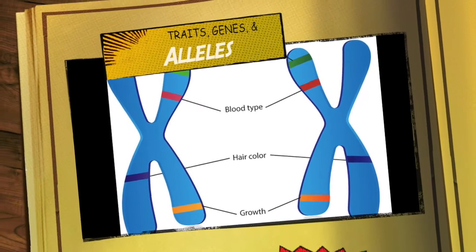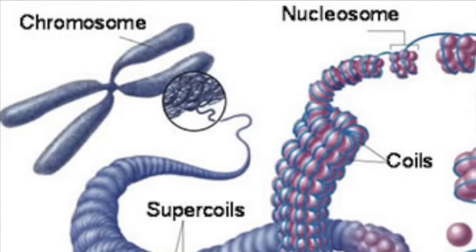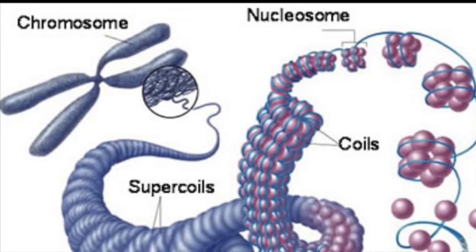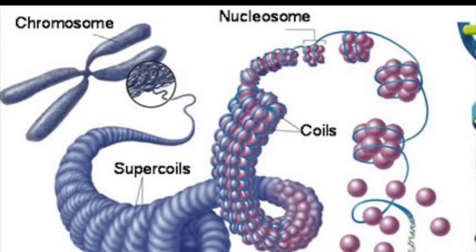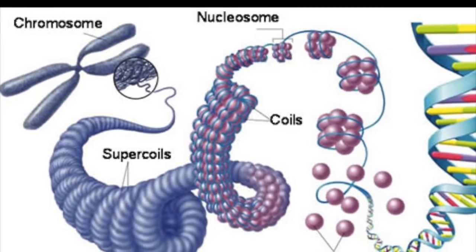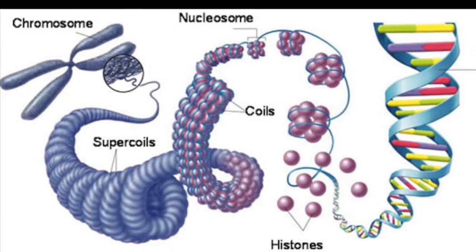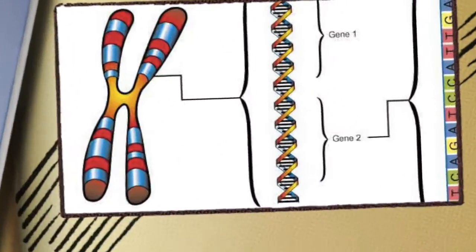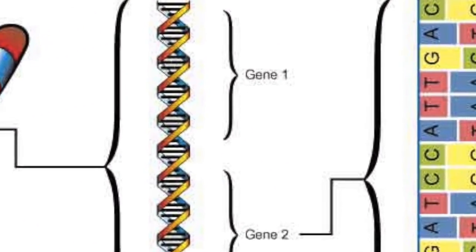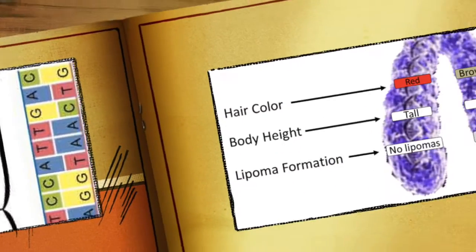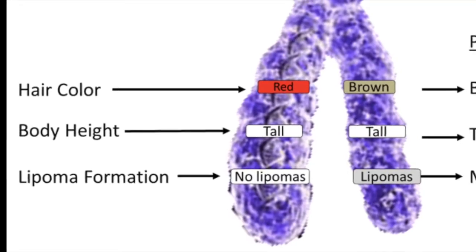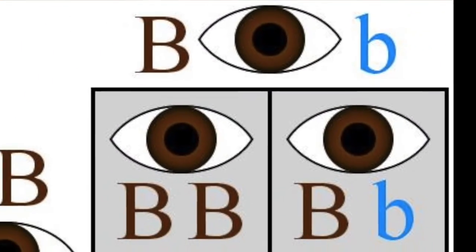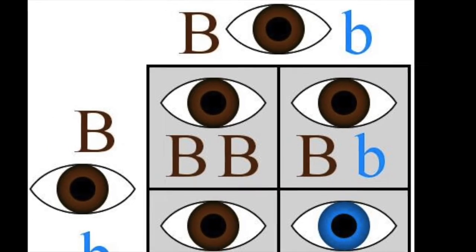Traits, genes, and alleles: our DNA is wound into chromosomes. Each of our chromosomes contains a long chain of DNA that encodes hundreds, if not thousands, of genes. Each of these genes can have a slightly different version from individual to individual — these variants of genes are called alleles.